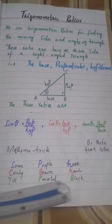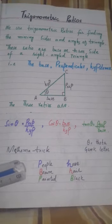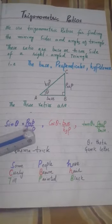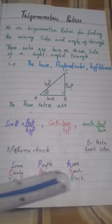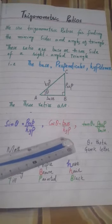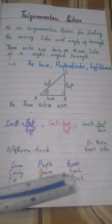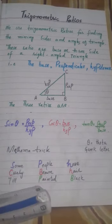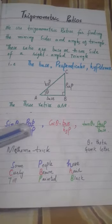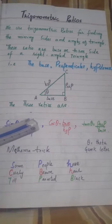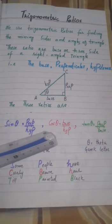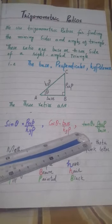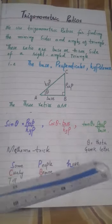We can learn these ratios by using this mnemonic: 'Some People Have Curly Brown Hair Till Painted Black.' We use only the capital letters of this statement. S-P-H gives Sin equals Perpendicular upon Hypotenuse; C-B-H gives Cos equals Base upon Hypotenuse; T-P-B gives Tangent equals Perpendicular upon Base.